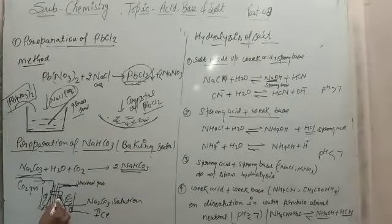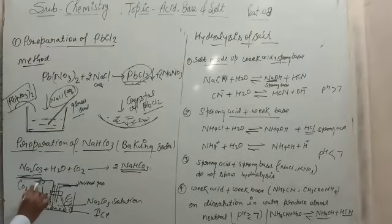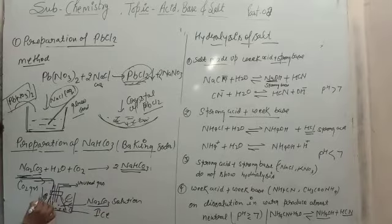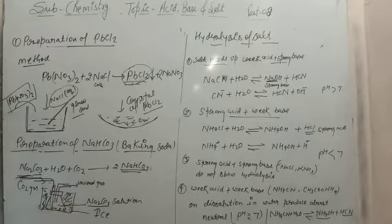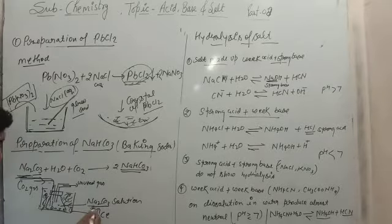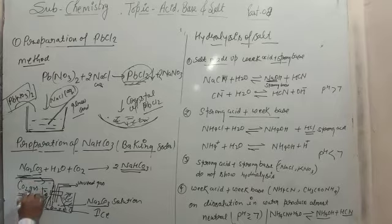We take a conical flask with two tubes — through one tube we enter the carbon dioxide. The sodium carbonate is already in the flask and it is coated with ice, meaning no heat is required because this reaction is exothermic. On cooling with ice, sodium carbonate reacts with the carbon dioxide gas and gets converted into sodium bicarbonate.